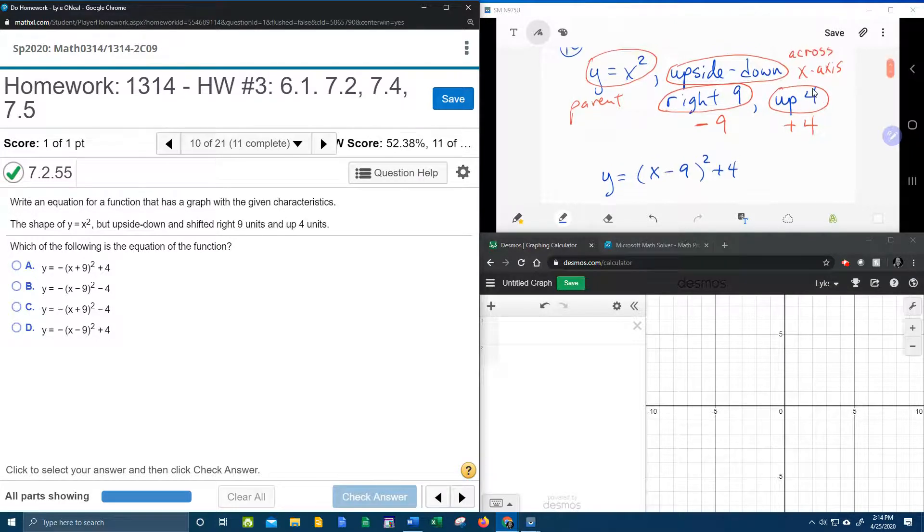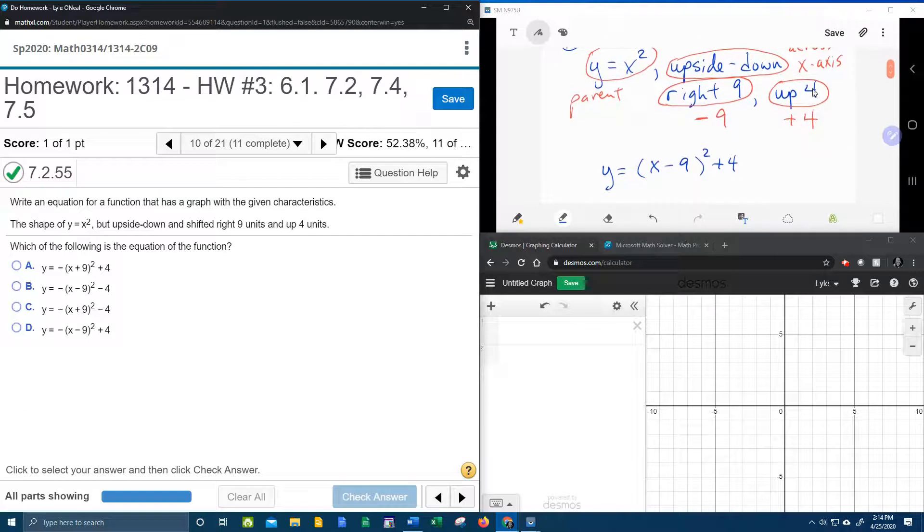And then a reflection across the x-axis means you're going to have a negative in front of the entire function. So upside down means negative out front. And let's see if any of our answer choices match that.